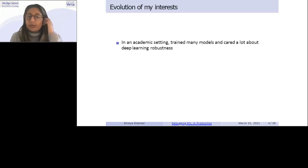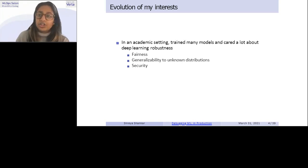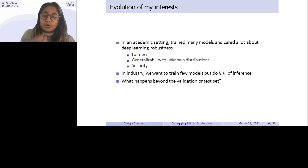In an academic setting, I trained a lot of models and cared about deep learning specifically and robustness. So that could include things like fairness or generalizability to unknown distributions, security in terms of adversarial examples. But in industry, I found that the needs were quite different. People want to train few models, or maybe they can train a lot of models. But the key point here is for every trained model, they want to do lots of inference on them, which I never really found myself doing a lot of inference in that research setting. And that motivates a pretty big question, I think, of what happens beyond the validation or test set accuracy.